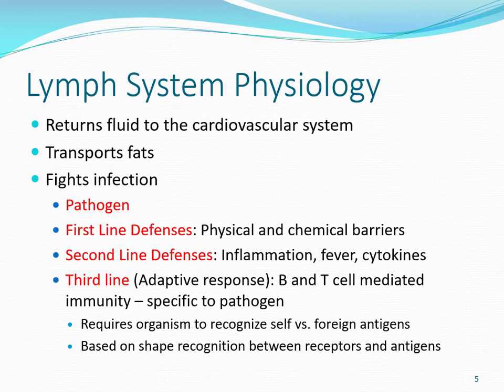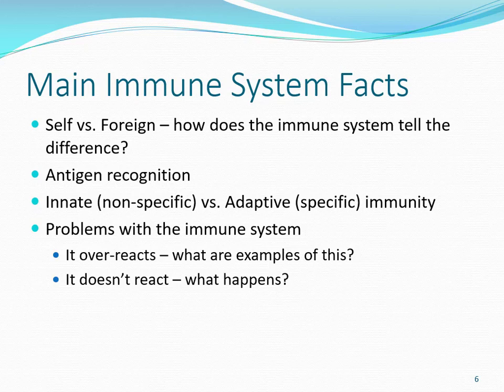The first and second line defenses are set up to keep you alive long enough so your third line can kick in, because it's very powerful and very specific. The most important thing about the immune system is its ability to recognize what's self and what's foreign, and only attack the foreign antigens. Antigens are usually proteins recognized by receptors on your immune cells. Every single B and T cell has a slightly different shaped receptor, so if you're ever exposed to that antigen, that one cell can get triggered and stimulated to replicate and produce a massive immune response.